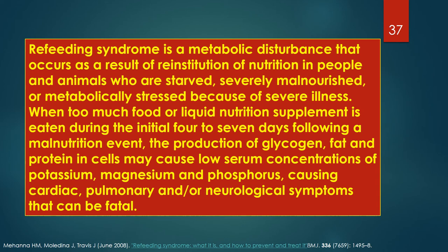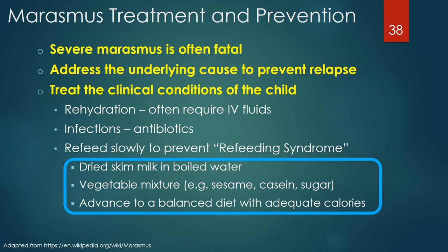When too much food or liquid nutrition supplement is consumed during the initial four to seven days following a malnutrition event, the production of glycogen, fat, and protein in cells may cause low serum concentrations of potassium, magnesium, and phosphorus, causing cardiac, pulmonary, and/or neurologic symptoms that can be fatal. One common refeeding plan uses dried skim milk in boiled water for a few days, then a vegetable mixture is added which may include sesame, casein, and sugar. This diet is then slowly advanced to a balanced diet with adequate calories.